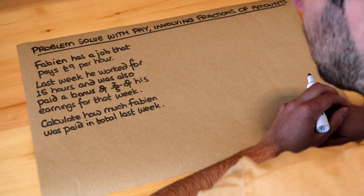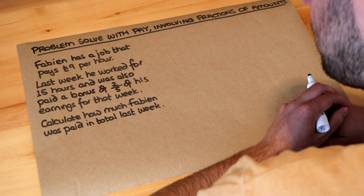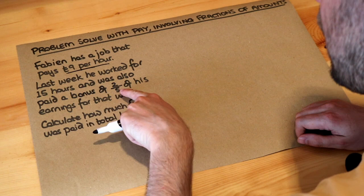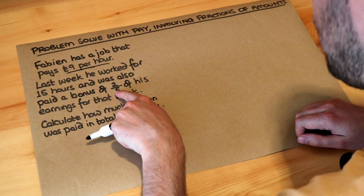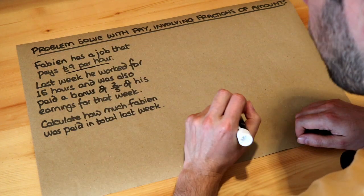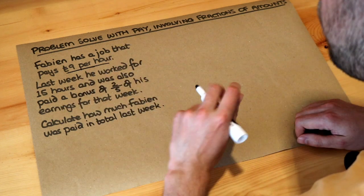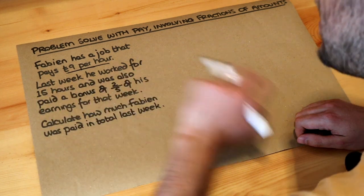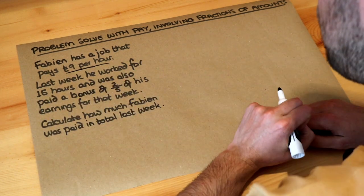Calculate how much Fabian was paid in total last week. Now what we could do is take the £9 per hour and add on the bonus of two-fifths for that hour to work out a new hourly rate. Or what might be easiest is to work out what his total pay was for the 15 hours and then add the bonus on, and I think that will be easier.